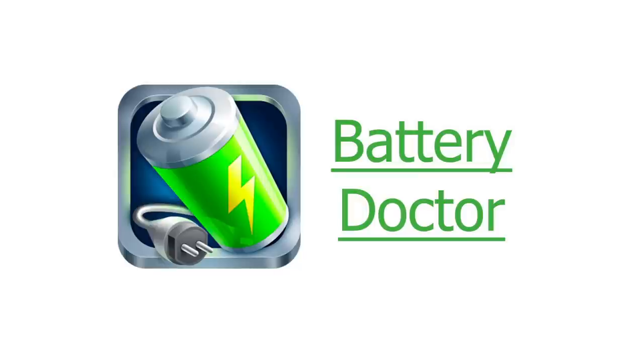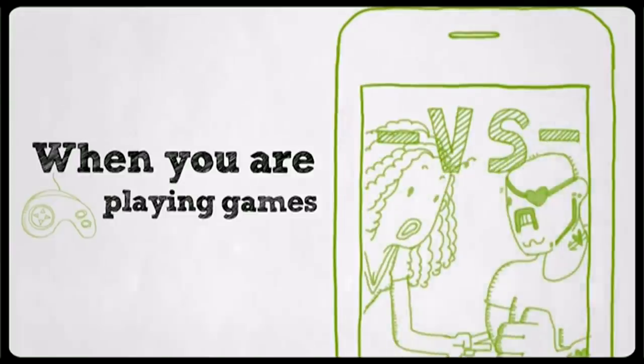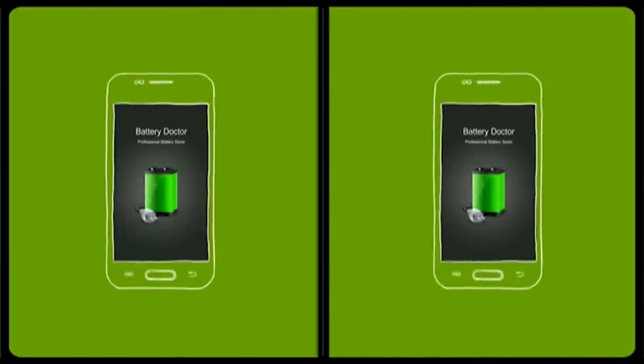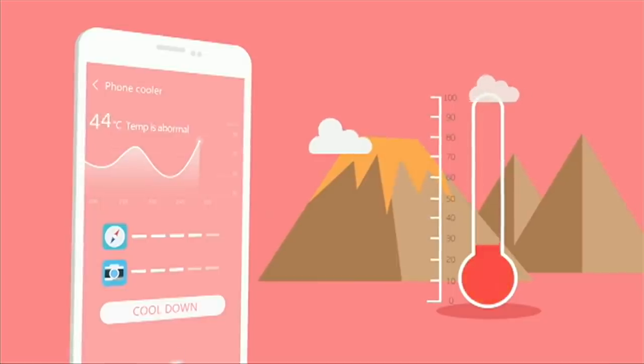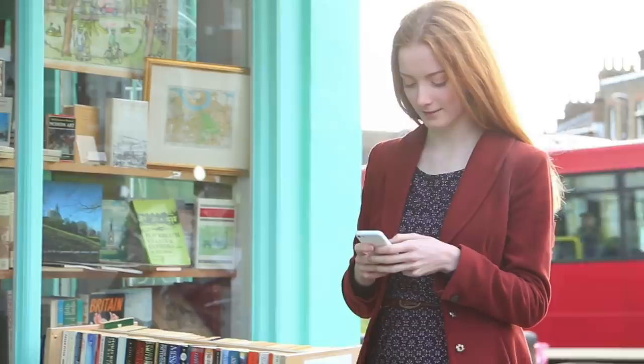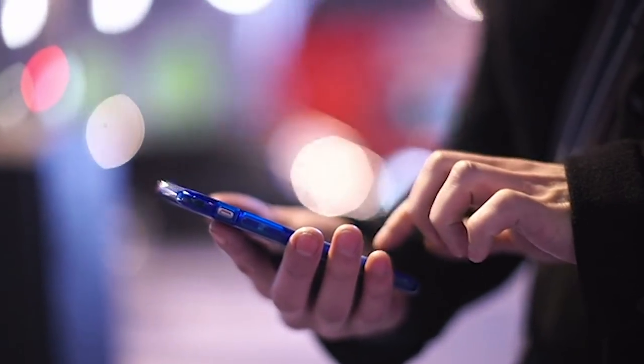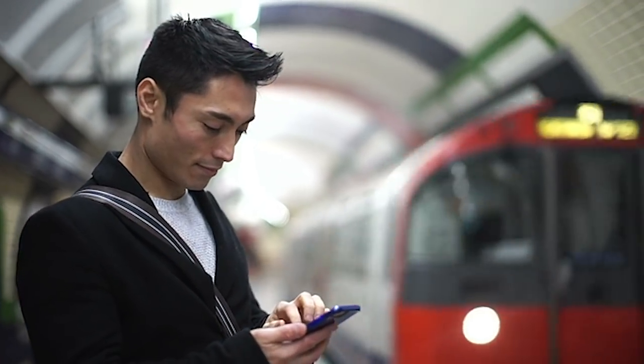Greenify, Battery Doctor and DU Battery Saver are three of the most popular battery saving Android apps. They've got millions of five-star reviews on Google Play suggesting people think they work. So we thought they made a good testing ground. They claim to do a number of things from dimming your brightness to hibernating or optimizing apps or reducing the data being used.